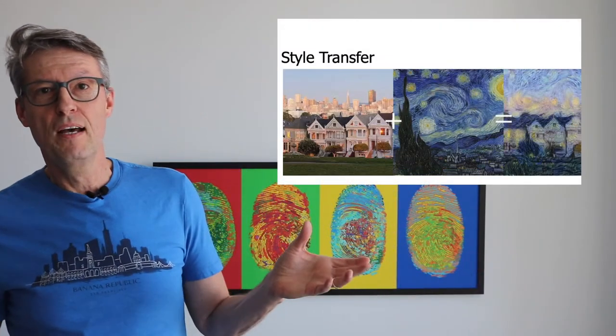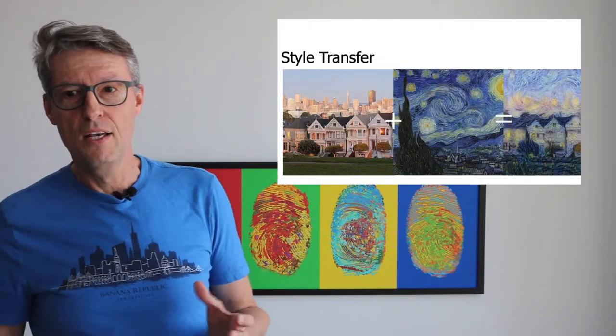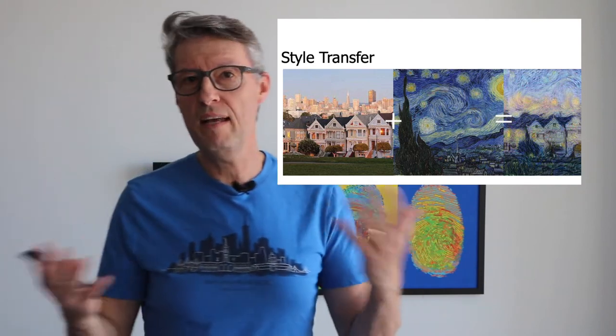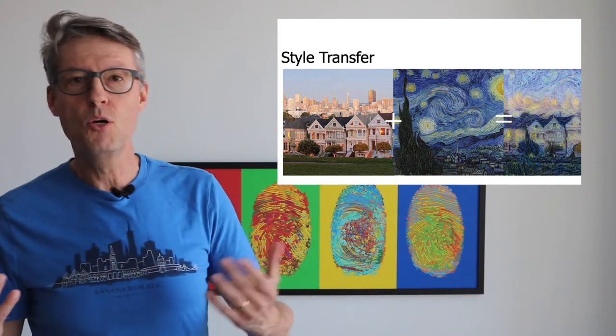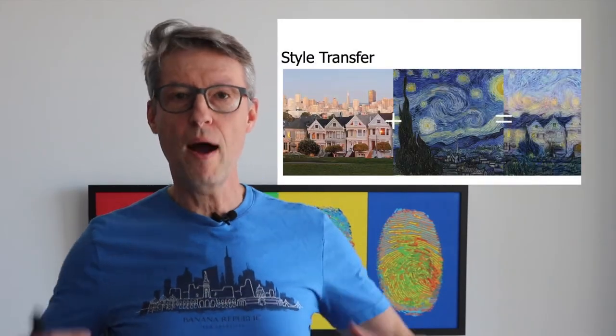You can also use computer vision for style transfer. You have two different images, and you want, for example, to apply the style of Van Gogh on top of a picture of San Francisco, and you create a third picture. This is data generation — you are generating new pictures.